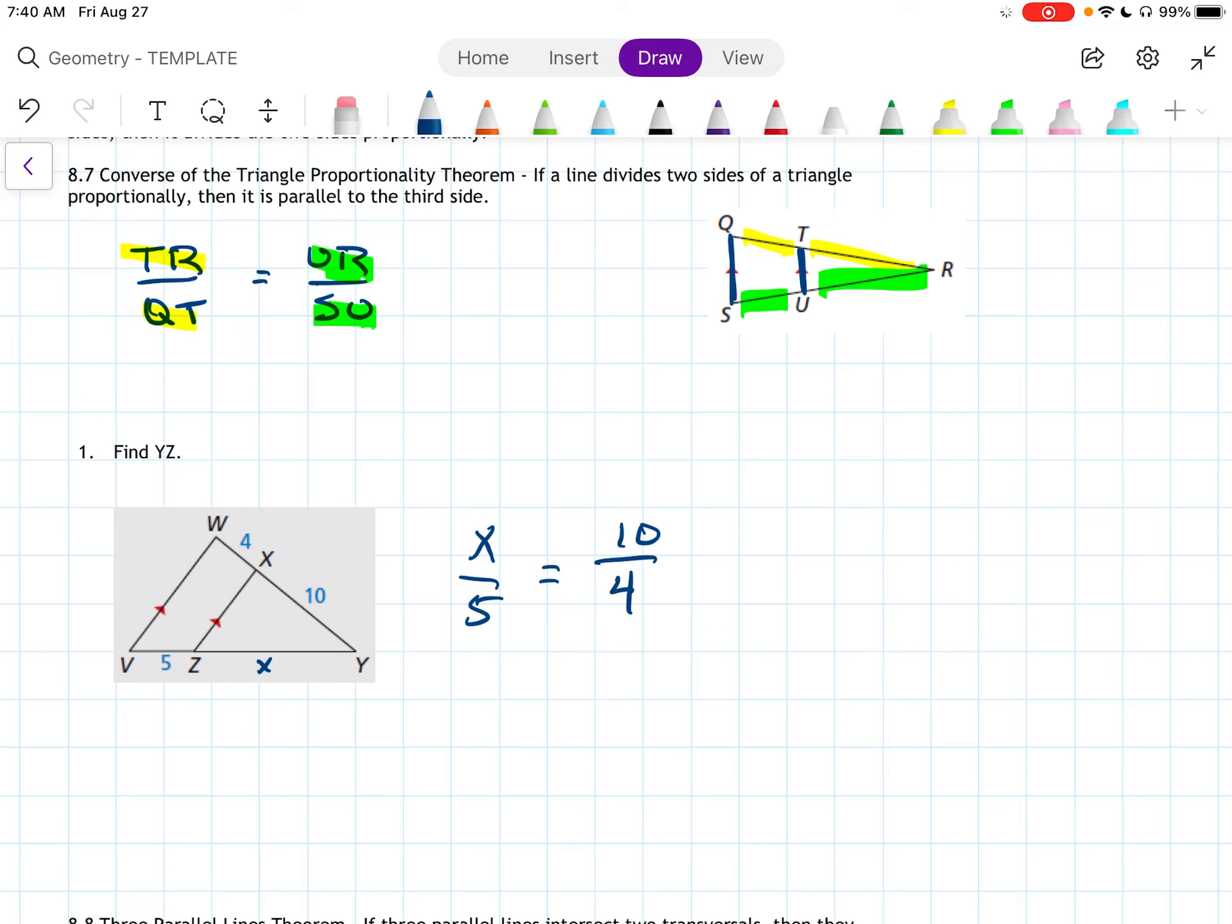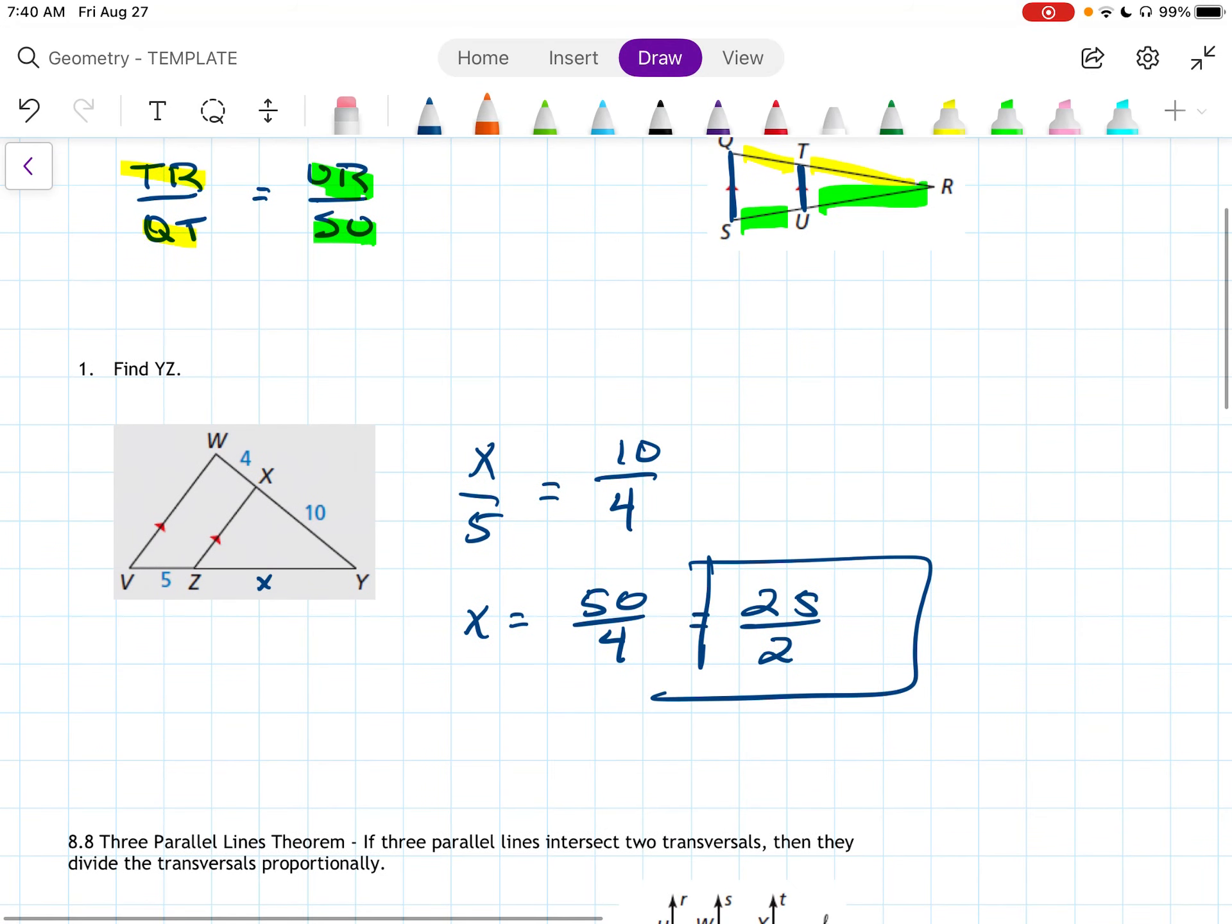Whenever I multiply by 5, I get X equals 50 over 4, which is 25 over 2. There we are. If we wanted to write it back in terms of the problem, we could say YZ equals 25 halves.